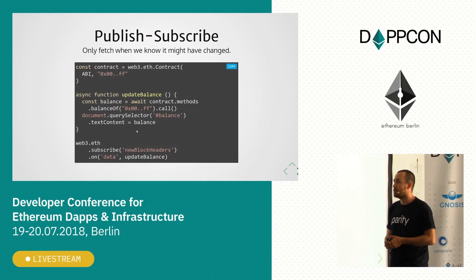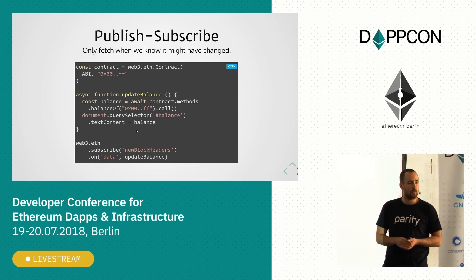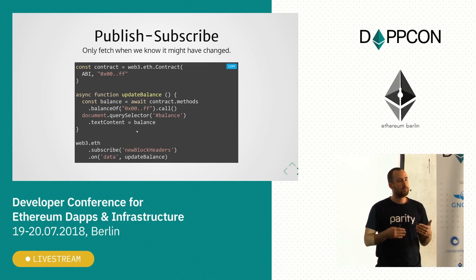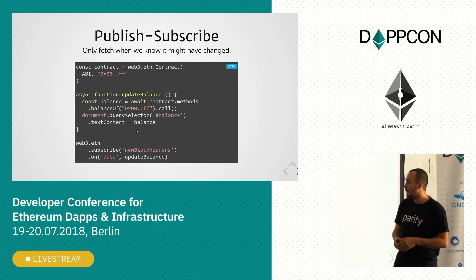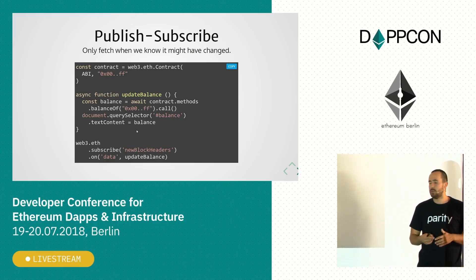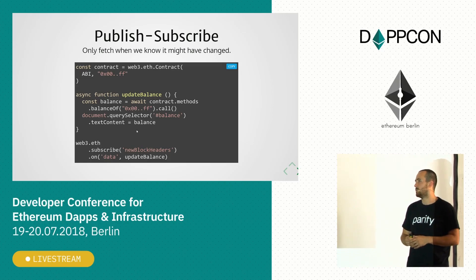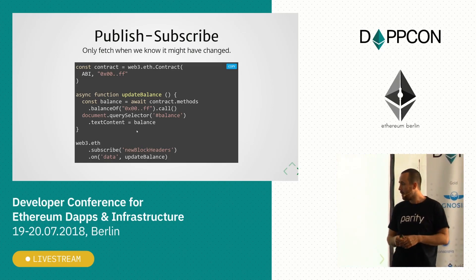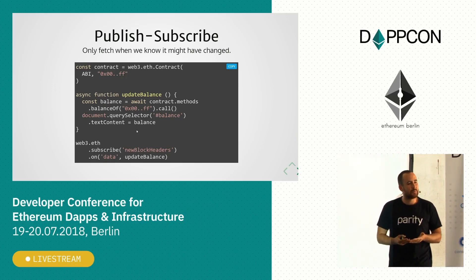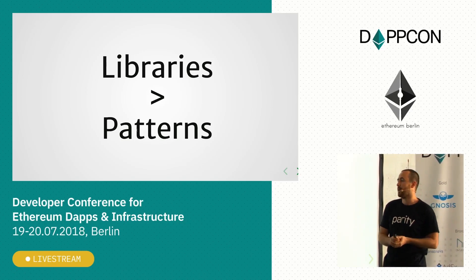Luckily, with recent additions to node RPCs, we can actually subscribe. If we are using WebSocket transport or IPC transport, we can subscribe to the node and be notified about new blocks imported by the node. This is how we use the Web3 subscription API — we say I want to know when there is a new block imported, and only when a new block is imported do we update the balance in our dApp.